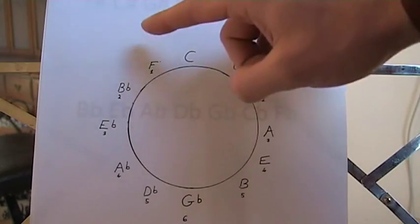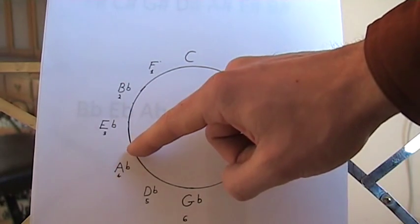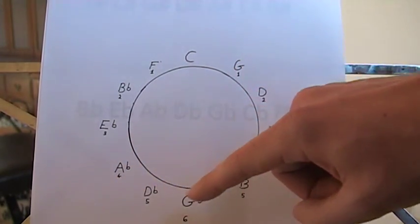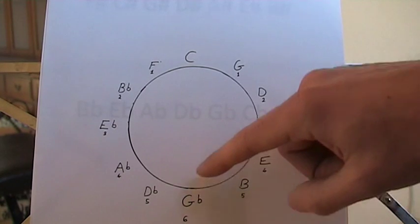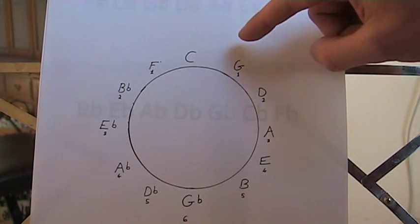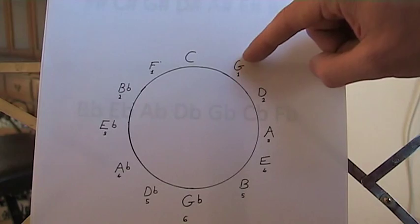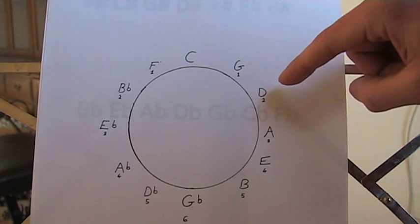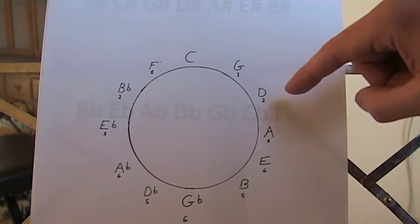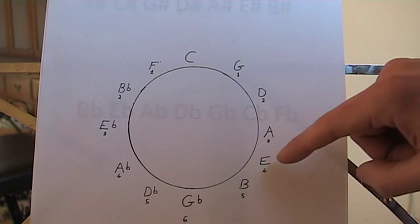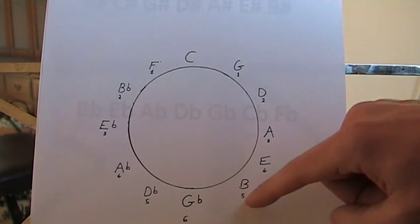So the numbers represent how many flats they've got. So four flats for A flat, five, and then six flats for G flat. And around the other side, in sharps, G is one, two sharps for D, three for A, four for E, and five for B.